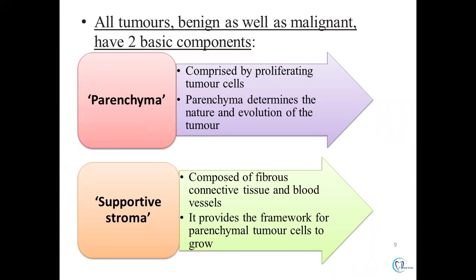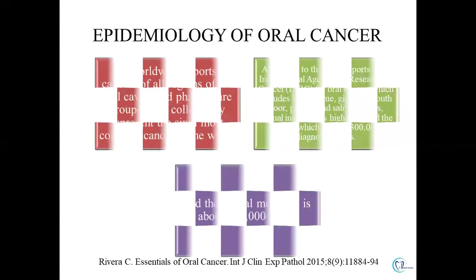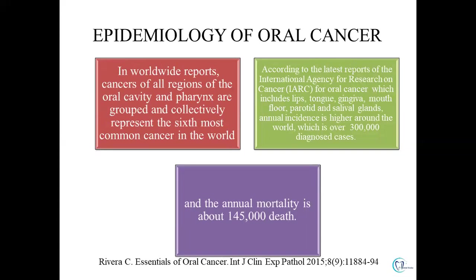Any tumor has two basic components. The parenchyma is composed of the neoplastically altered or transformed cells and forms the main proliferation of neoplastic cells. The stroma is the supporting connective tissue surrounding the tumor mass. The parenchyma determines the nature of the tumor — if of fat cell origin it is a lipoma, if collagen fiber origin it is a fibroma, and if epithelial origin it is a carcinoma.